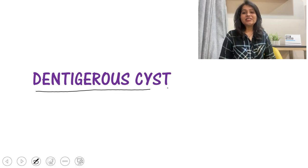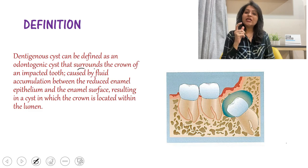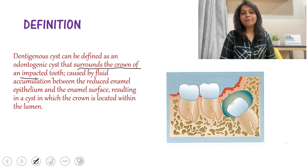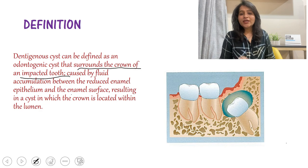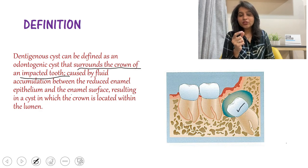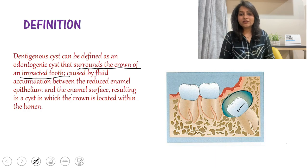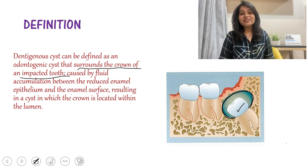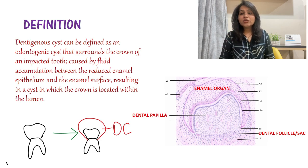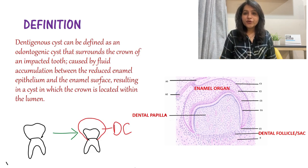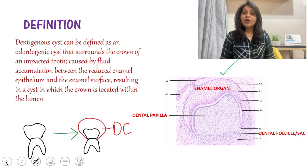A dentigerous cyst is a cyst that surrounds the crown of an impacted or an embedded tooth. If you can see this image, there is an impacted tooth within the bone and there's a cyst that surrounds it. Now how is it formed? Basically, if you remember your first year BDS, the formation of a tooth begins with a dental lamina.